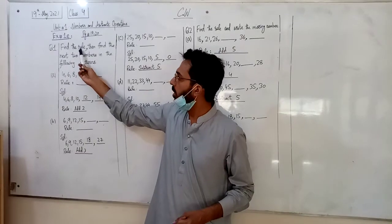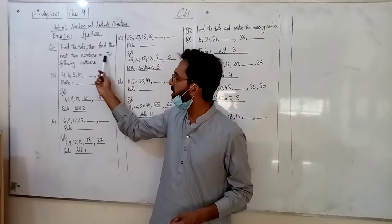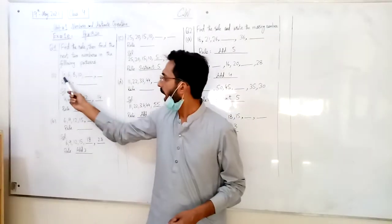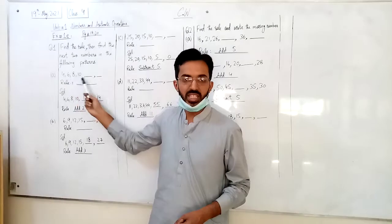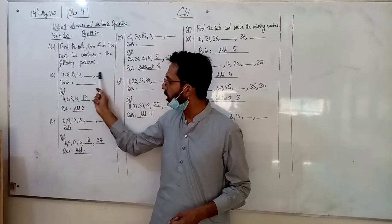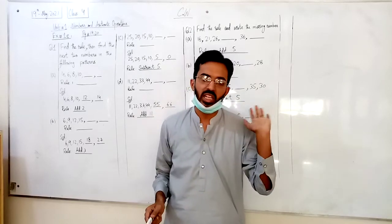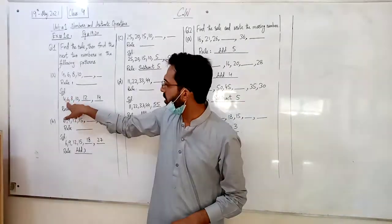Find the rule. You have to find the rule, then find the next two numbers in the following pattern. The numbers are in a pattern, in a sequence. You can find the next two numbers and then find the rule following, meaning the rule following the numbers.